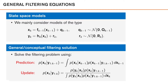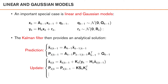Now, in theory we know how to solve the filtering problem — we just plug in our models in the prediction and update step of our filter. Our motion model goes into the prediction step, and our measurement model defines the likelihood function in the update step. So far, we at least know how to do this for linear and Gaussian models.